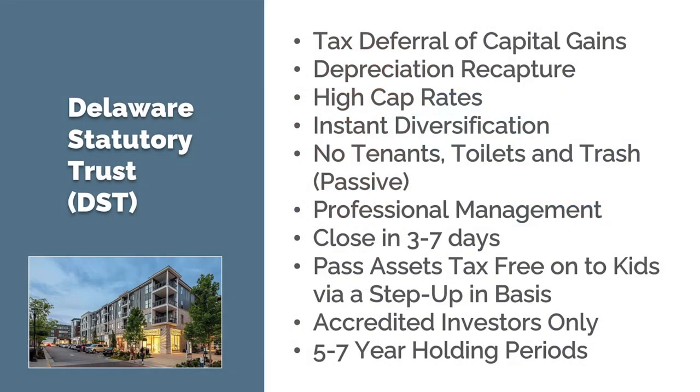A DST is going to be held on average around five to seven years, and it would never be more than a max of 10 years. Once you are in the DST, there's no liquidity until that sells, and it will sell for sure within 10 years — usually within five, six, or seven years. When that sells, you're faced with the same issue: you either 1031 into another property, or — what most folks do — you 1031 into another DST. You can just continue doing 1031s until your kids get that step-up in basis.